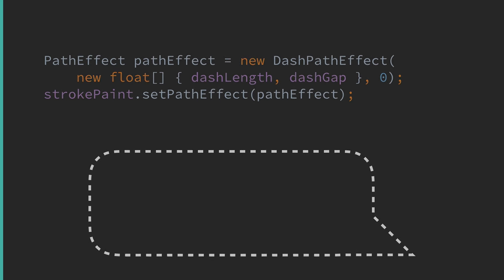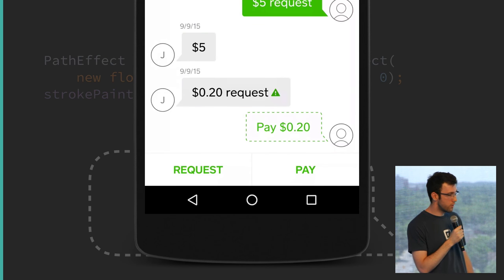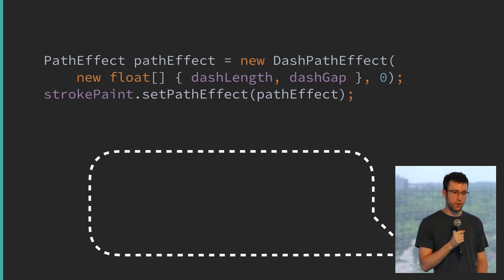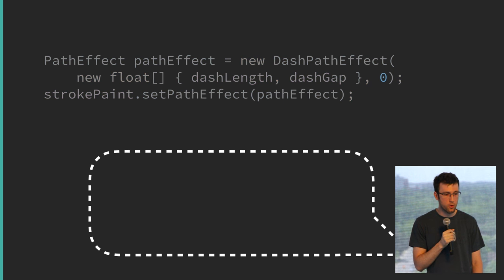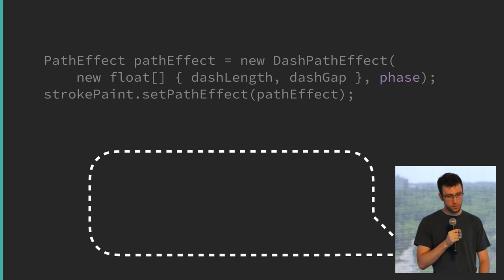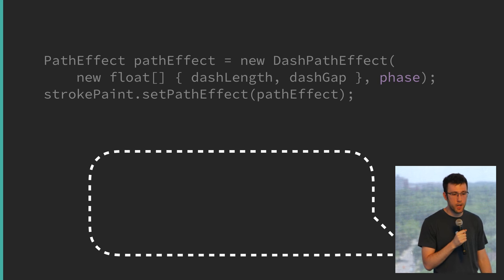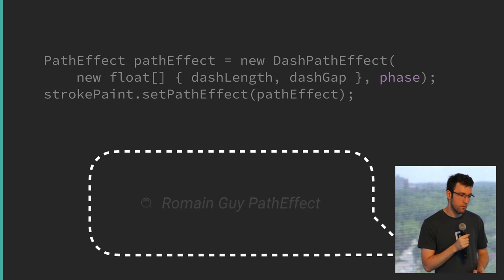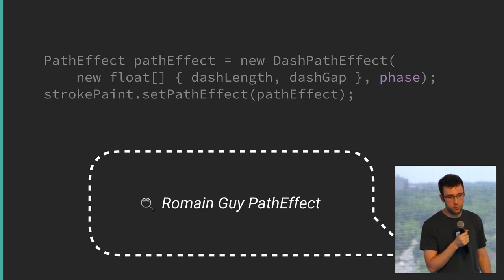We took this one step further — the dash lines actually move around to make it more playful. This is easy to do. DashPathEffect has a second parameter called the phase, which is the offset from where it starts drawing the path effect. In an animator, we update the phase from zero up to the dash length plus gap length, and on every frame it slightly moves the dash by one. For more on this, there's a fantastic blog post by Romain Guy — search 'Romain Guy path effects' and it will be the first result.